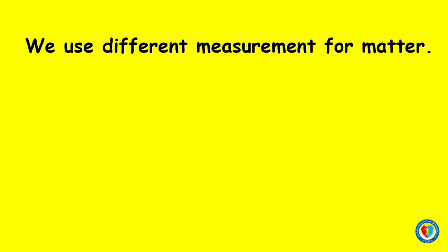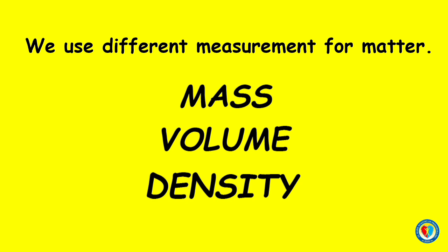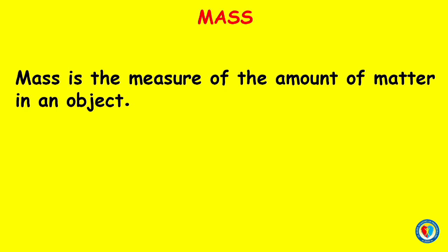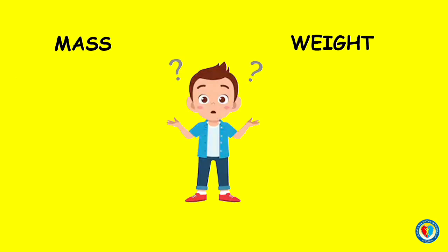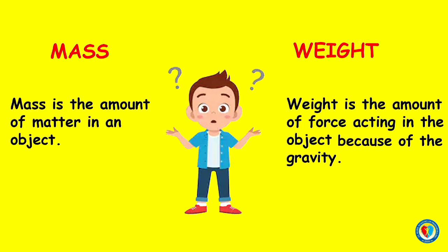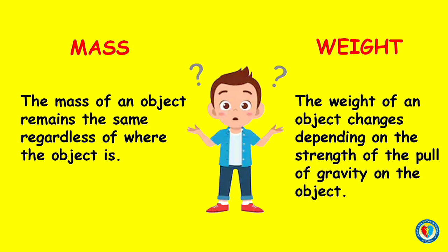We use different measurements for matter. These are mass, volume, and density. Mass is the measure of the amount of matter in an object. Mass and weight are often confused. Mass is the amount of matter in the object, while weight is the amount of force acting on the object because of gravity. The mass of an object remains the same regardless of where the object is, while the weight of an object changes depending on the strength of the pull of gravity.